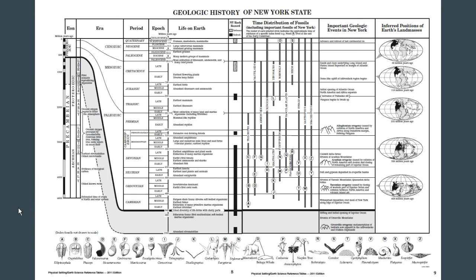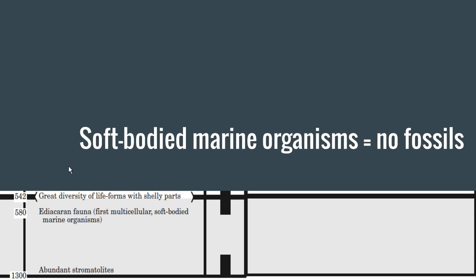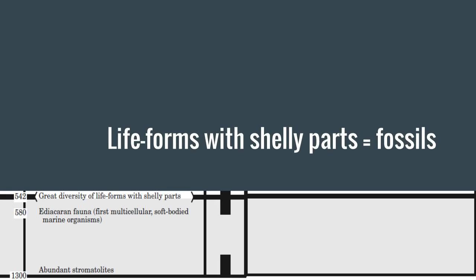Another thing of interest in life on Earth is abundant stromatolites happening about 1,300 million years ago, and then the first multicellular soft-bodied marine organisms. Do you think you get a lot of fossils with soft-bodied organisms? Not until you get great diversity of life forms with shelly parts — the shelly parts that can be preserved in sedimentary rocks. So: soft-bodied marine organisms equals no fossils, and life forms with shelly parts equals fossils.